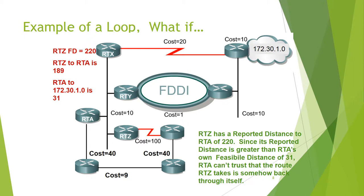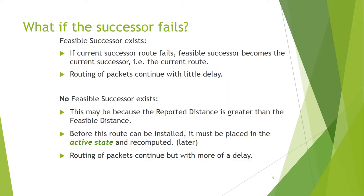RTA cannot trust that the route RTZ takes is not looping back through itself. When the current successor route fails, the feasible successor becomes the new current successor, and routing of packets continues with little delay. If no feasible successor exists — for example because the reported distance is greater than the feasible distance — before this route can be installed it must be placed in the active state and recomputed, causing routing of packets to continue with more delay.